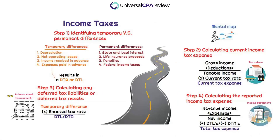Now let's focus on what we can expect to see on some of the multiple choice questions come exam day. The core elements of income taxes for the FAR exam are based around: identifying temporary versus permanent differences, calculating the current income tax expense, calculating any deferred tax liabilities or deferred tax assets, and determining what is going straight to the income statement as our income tax expense. We're going to focus your attention on this and attack it by building our mental map.